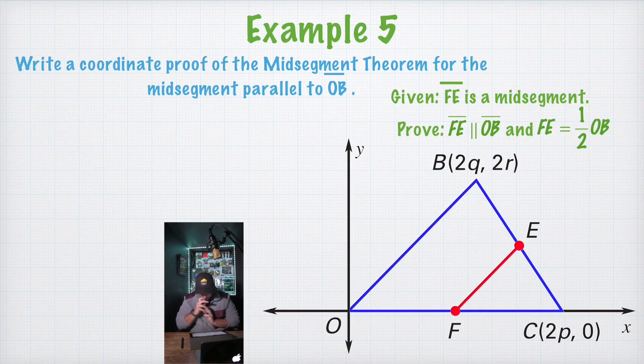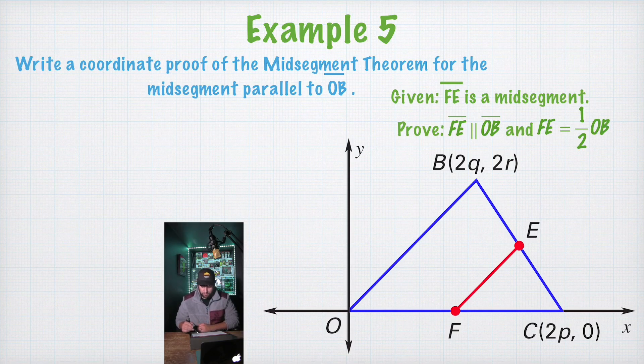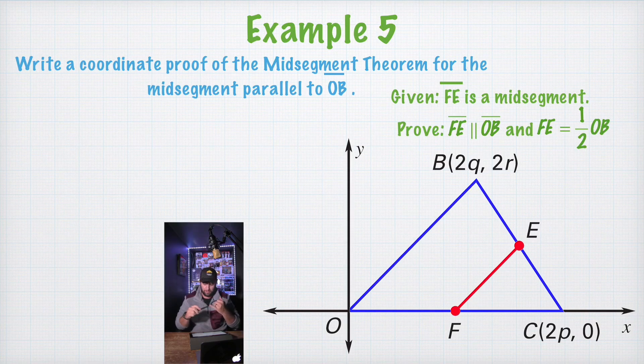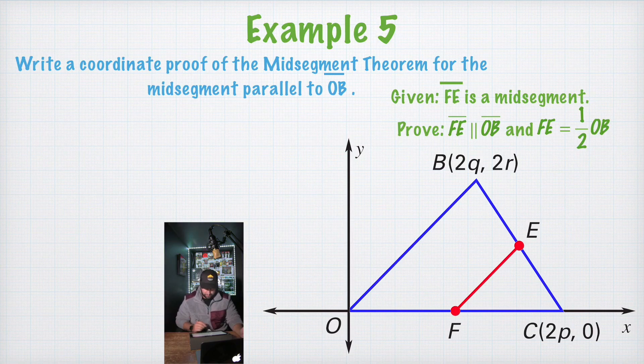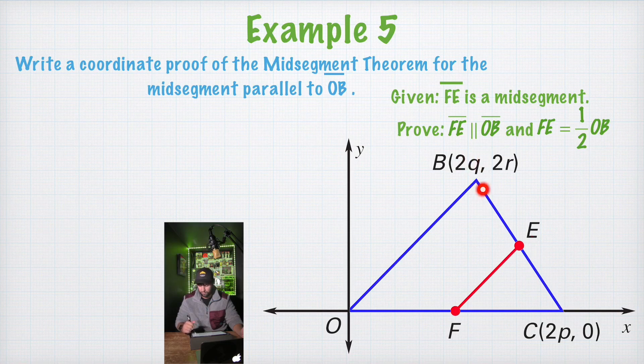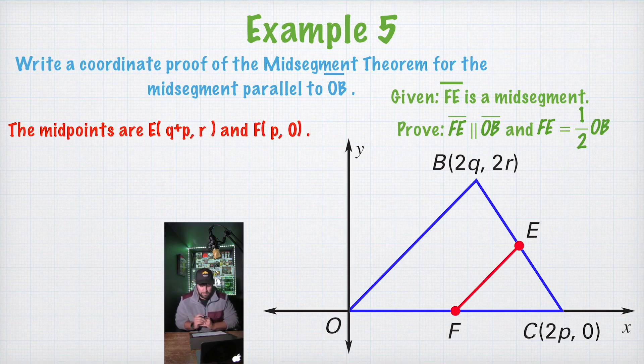So let's go ahead and get started. So here they've already placed the coordinates for us and labeled them. They want us to write a coordinate proof of the mid segment theorem for the mid segment parallel to OB. So what they want us to do is they want us to prove that FE is parallel to OB. And that FE is one half of OB. So we're going to have to find a slope of OB and FE. And we're also going to have to find the length of OB and FE. So we're going to find, first off, we're going to find the midpoints F and E. And we can do that by using the midpoint formula on BC and also OC. So I'm going to go ahead and throw that out there. The midpoints are E is Q plus P, R and F is P, zero.